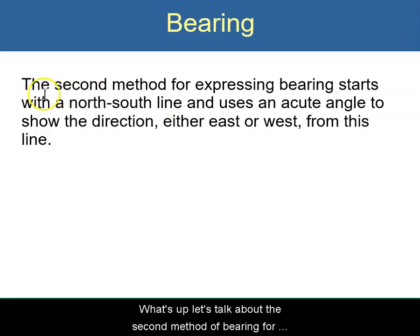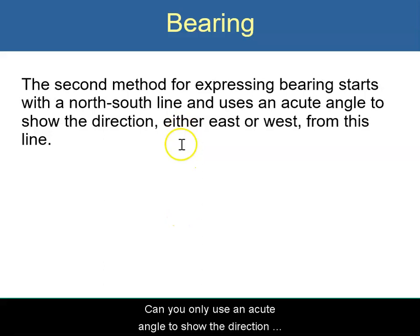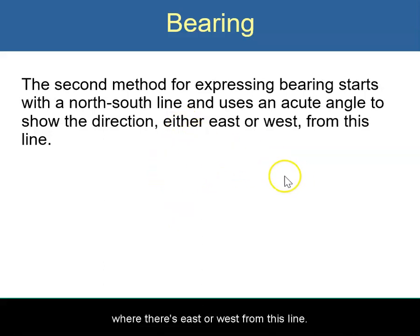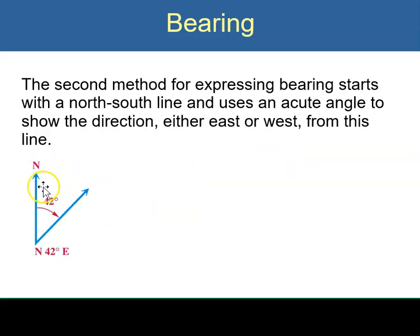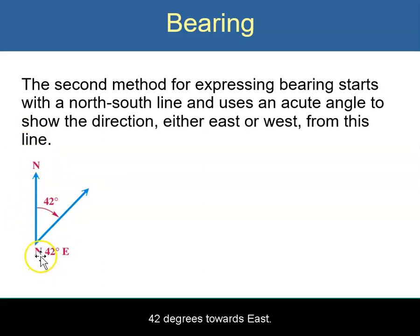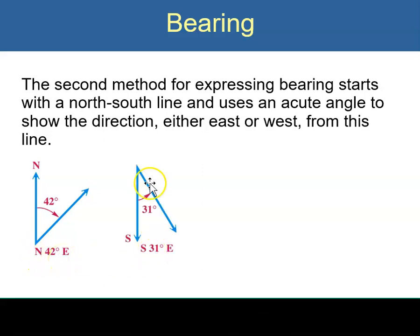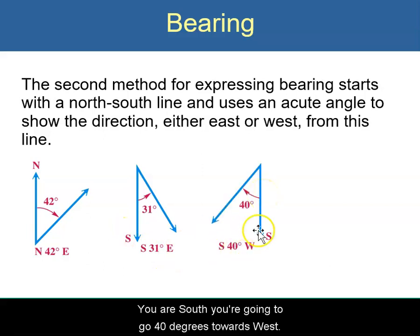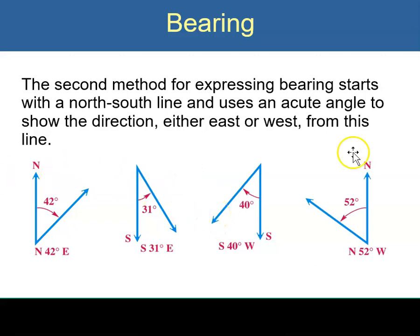So let's talk about the second method of bearing. The second method starts with the north-south line, and you only use an acute angle to show the direction, whether it's east or west from this line. For instance, from north, this would be a bearing of N 42° E — north, 42 degrees towards east. South, 31 degrees towards east. You are south, going 40 degrees towards west. North is up, south is down, east is this way, west is this way.